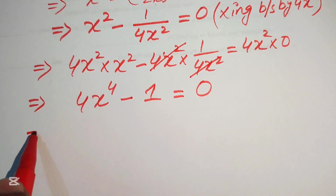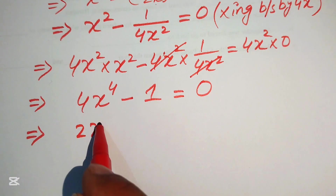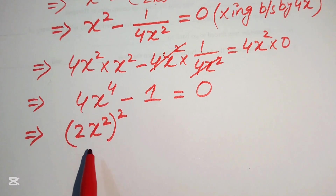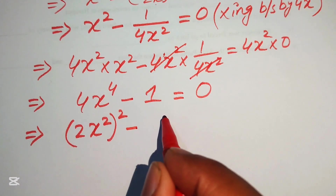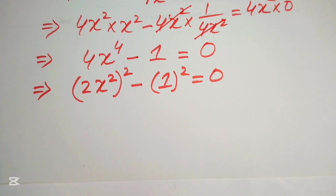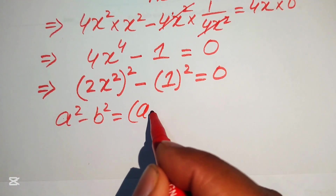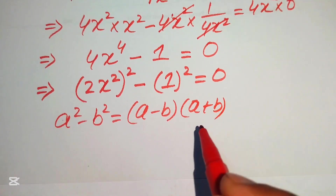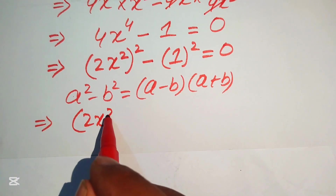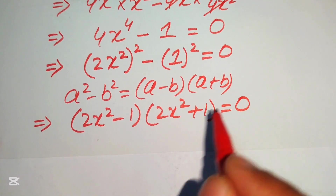We rewrite 4x⁴ as (2x²)² and 1 as 1². Applying the algebraic identity a² - b² = (a - b)(a + b), the expression becomes (2x² - 1)(2x² + 1) = 0.